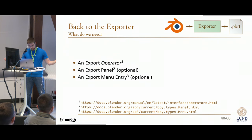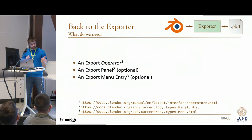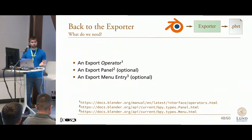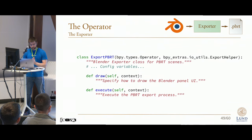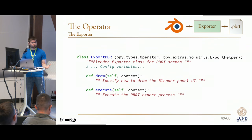What do we actually need to create an exporter? Basically, we need exactly the same things that we need for the importer — an operator to do the export, and then optionally a panel and a menu entry. The operator is very similar to our importer; the main difference is that instead of deriving from the import helper, we derive from the export helper.